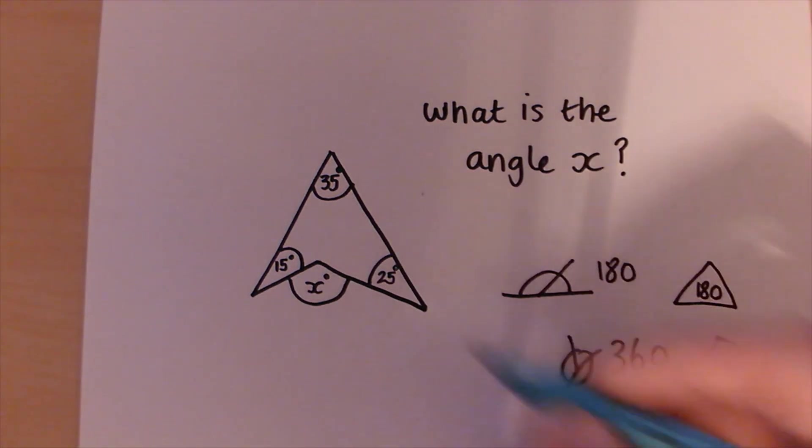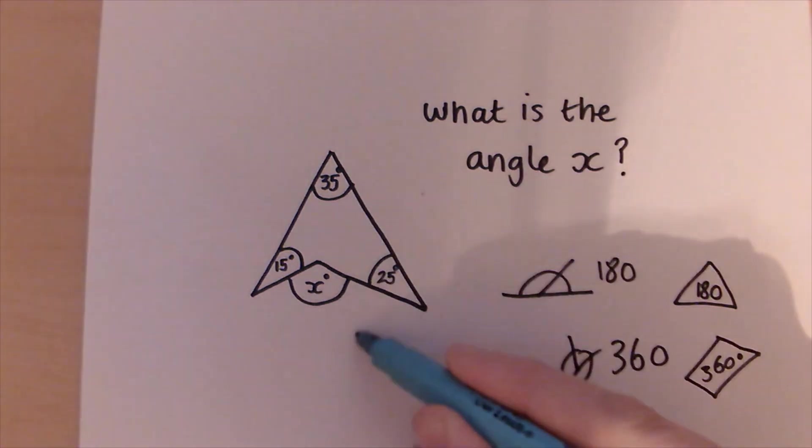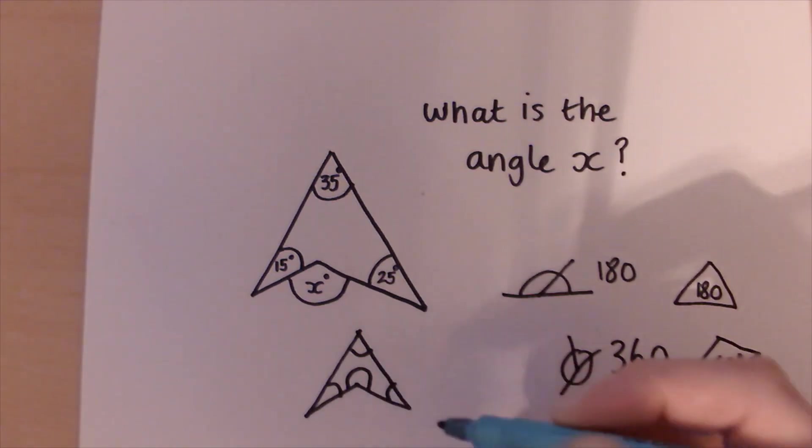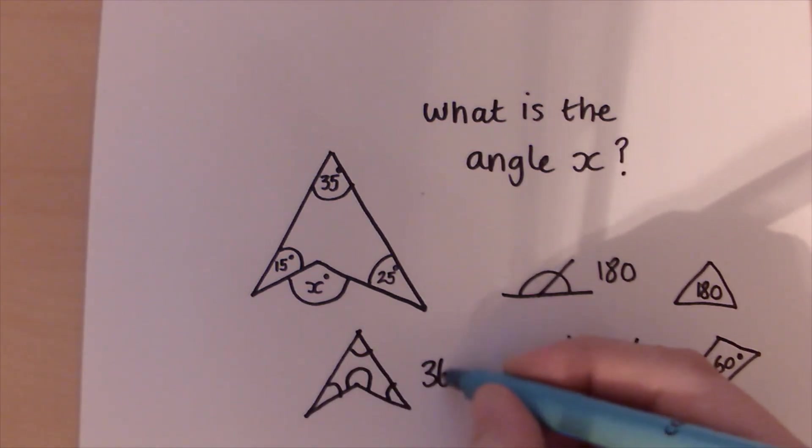This is the one that we're going to use here. Look, angles in a four sided shape. So one, two, three, four would have to add up to 360 degrees.